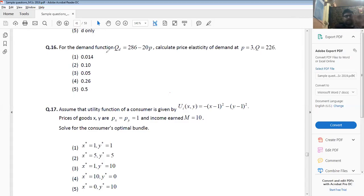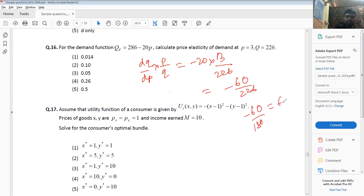Okay, question 16. DQDP into P by Q - this is the elasticity. DQDP minus 20 times 3 by 226, which is minus 60 by 226. Looking at the options, minus 60 by 180 has a value of minus 0.33333. This will be lower than that, but not as low as 0.1, 0.05, or 0. This is the most probable answer.